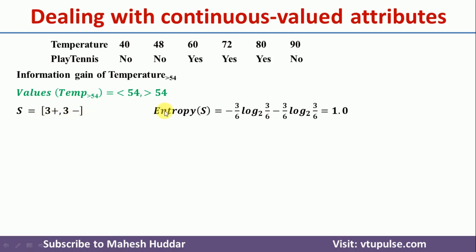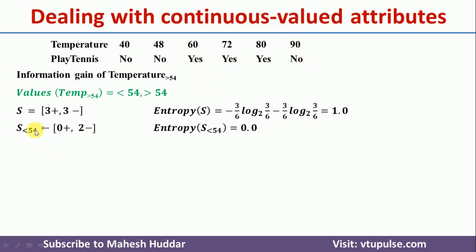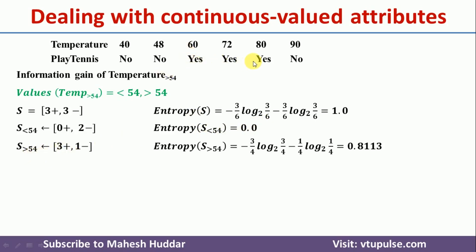So in this case, the entropy of the whole dataset is 1.0. Now we need to find the entropy of the possible values: less than 54 and greater than 54. For less than 54, we have two instances, and both of them are negative — zero positive and two negative — so the entropy is 0.0. For greater than 54, we have three positive and one negative, so the entropy is 0.8113.